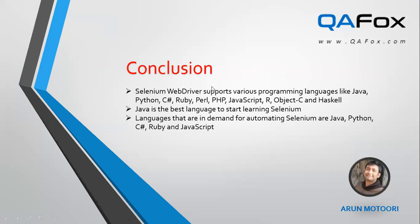In conclusion: Selenium WebDriver supports various programming languages for creating automation scripts — Java, Python, C#, Ruby, Perl, PHP, JavaScript, R, Objective-C, and Haskell. Java is the best language for beginners to start learning Selenium, and I recommend starting with Java. The languages most in demand in the market for Selenium automation projects are Java, Python, C#, Ruby, and JavaScript. That covers what I explained in this session.